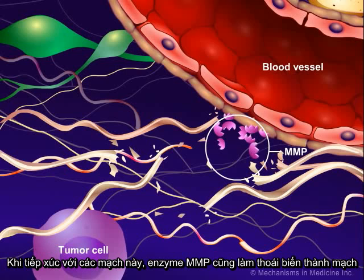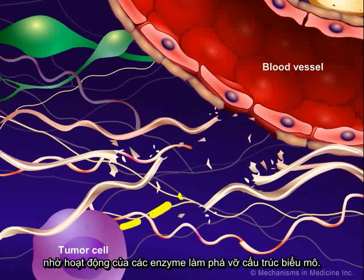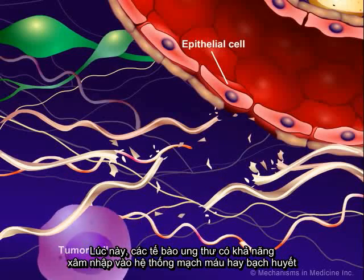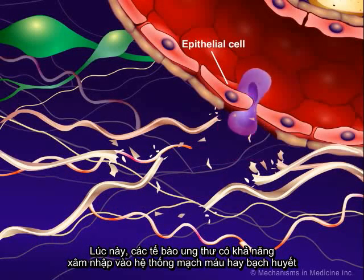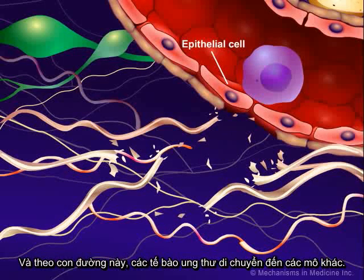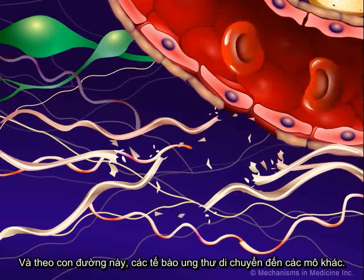When the MMPs reach the vessel, they break down the basement membrane surrounding the vessel through enzymatic action, opening access to the epithelial cells lining the vessel. Tumor cells can then migrate into the blood and lymph by entering through the tight junctions of the epithelial cells. The tumor cells are then transported through the blood and lymph to other tissues.